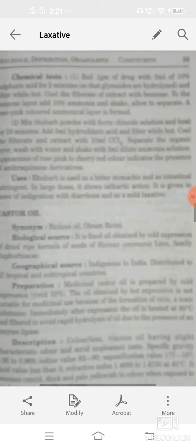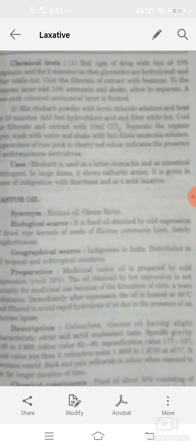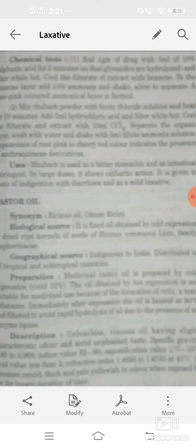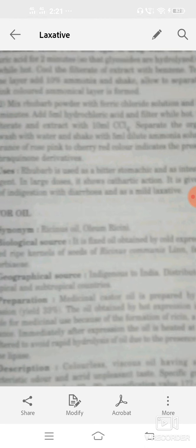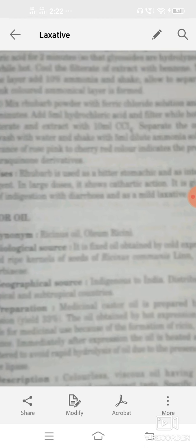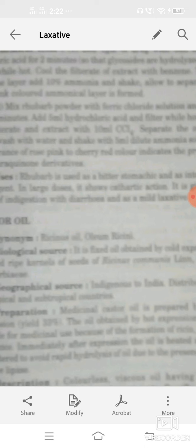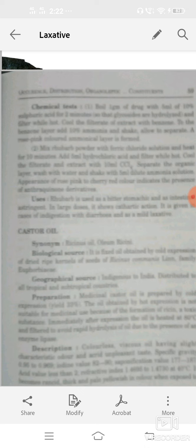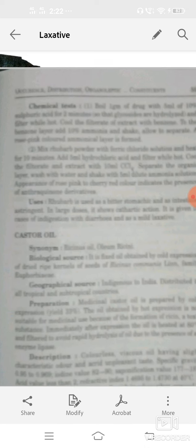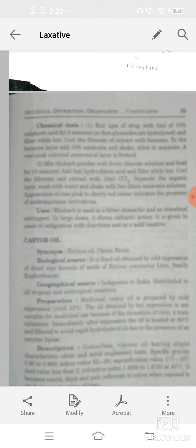Next is castor oil. Castor oil synonym: ricinous oil, oleum ricinous. That is a fixed oil obtained by cold expression of dried ripe seeds of Ricinus communis, belongs to family Euphorbiaceae. Geographical source: it's indigenous to India, distributed to all tropical or subtropical countries.